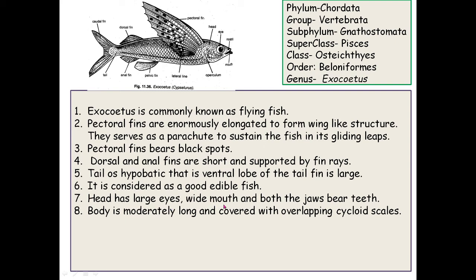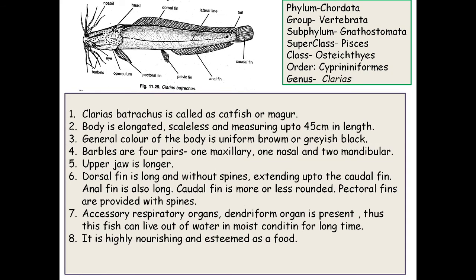Both jaws bear teeth. The body is moderately long and covered with overlapping cycloid scales. These are the characteristic features of Exocetus, which belongs to the order Beloniformes.